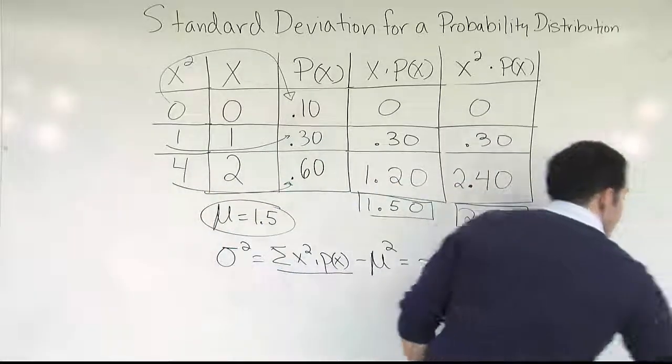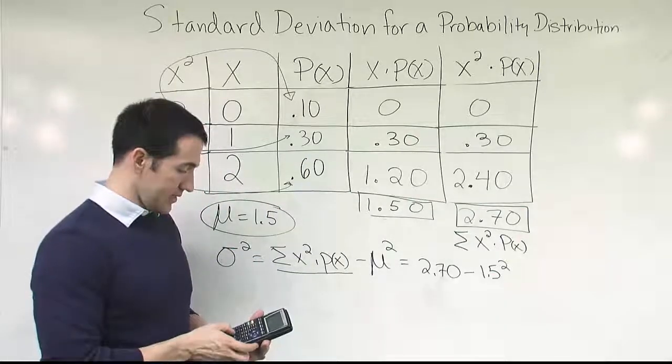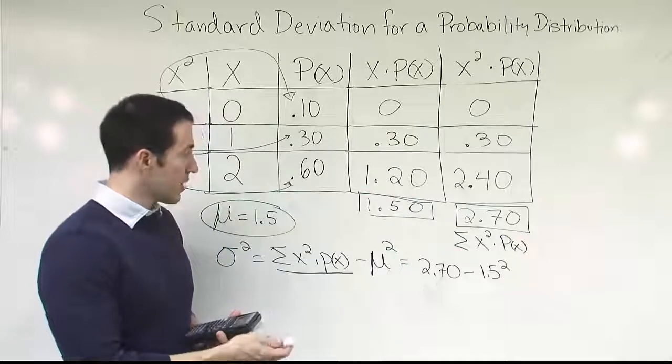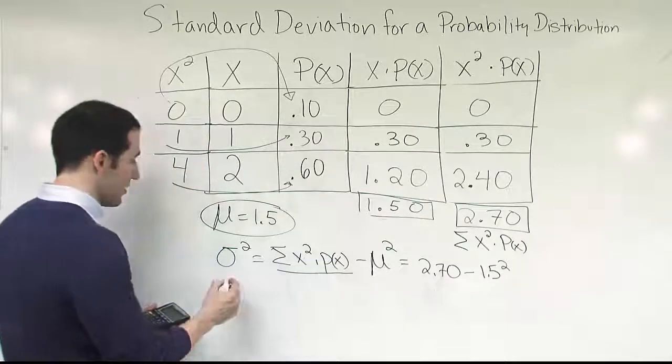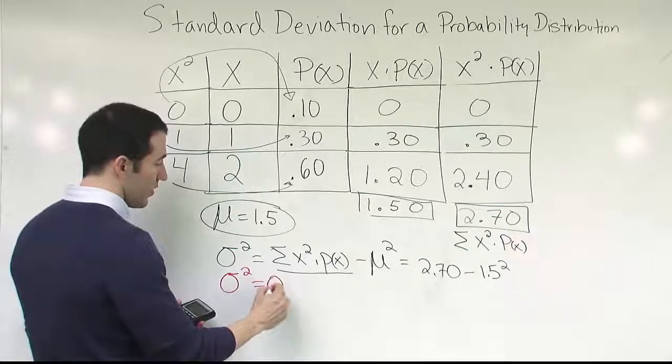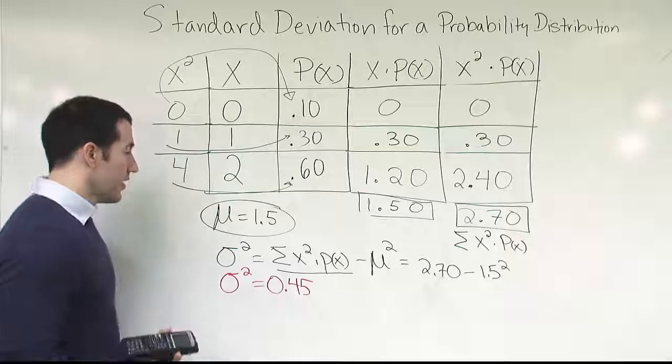Okay. So if I do that, let's see what we get. 2.7 minus 1.5 squared. So we get .45. That means that our variance is 0.45. Very good.